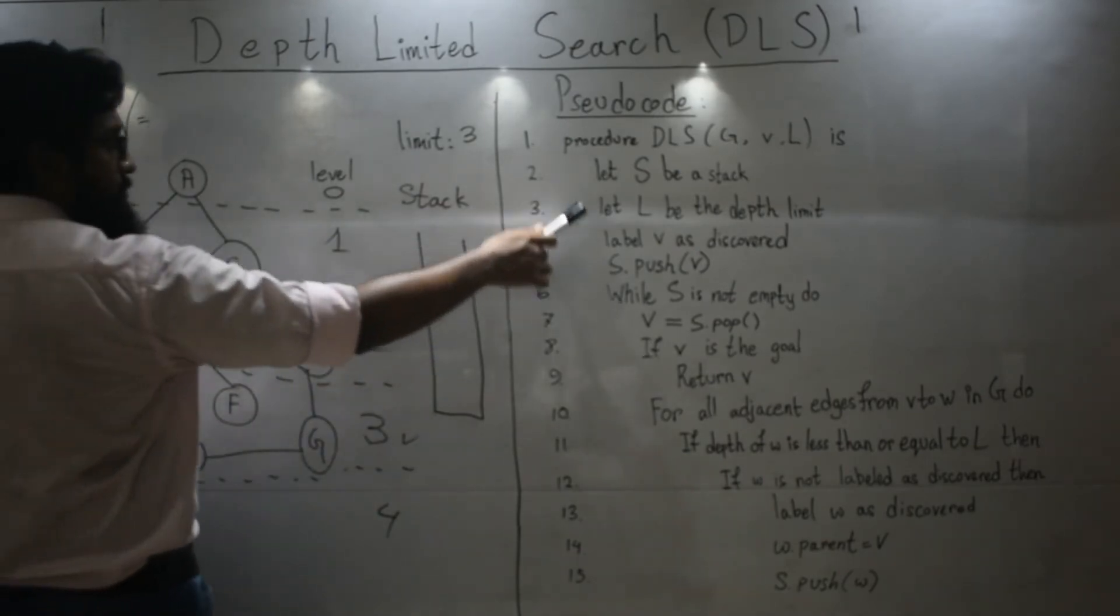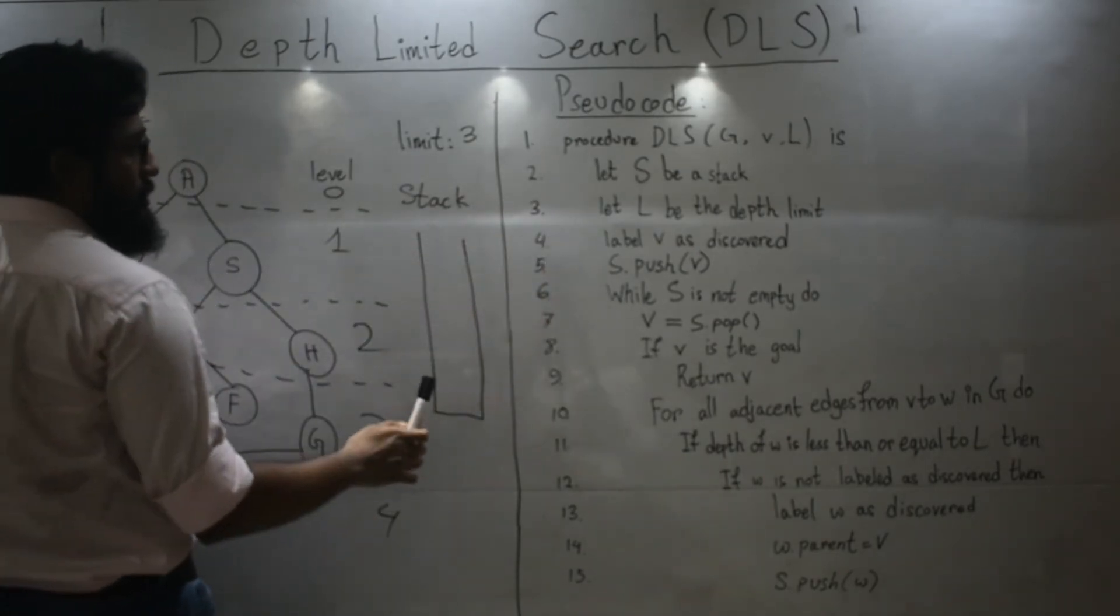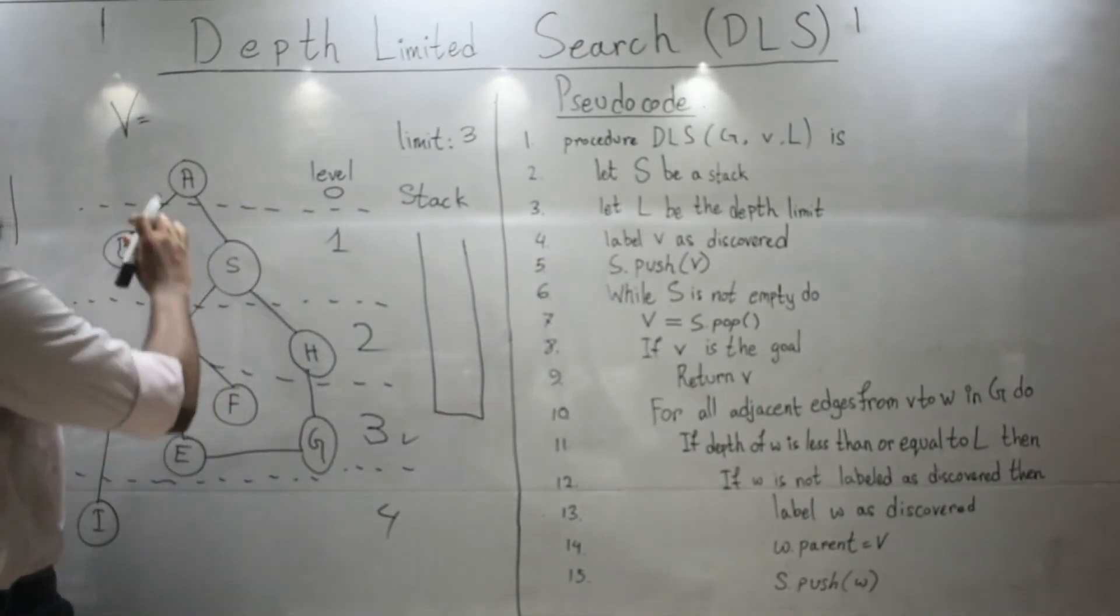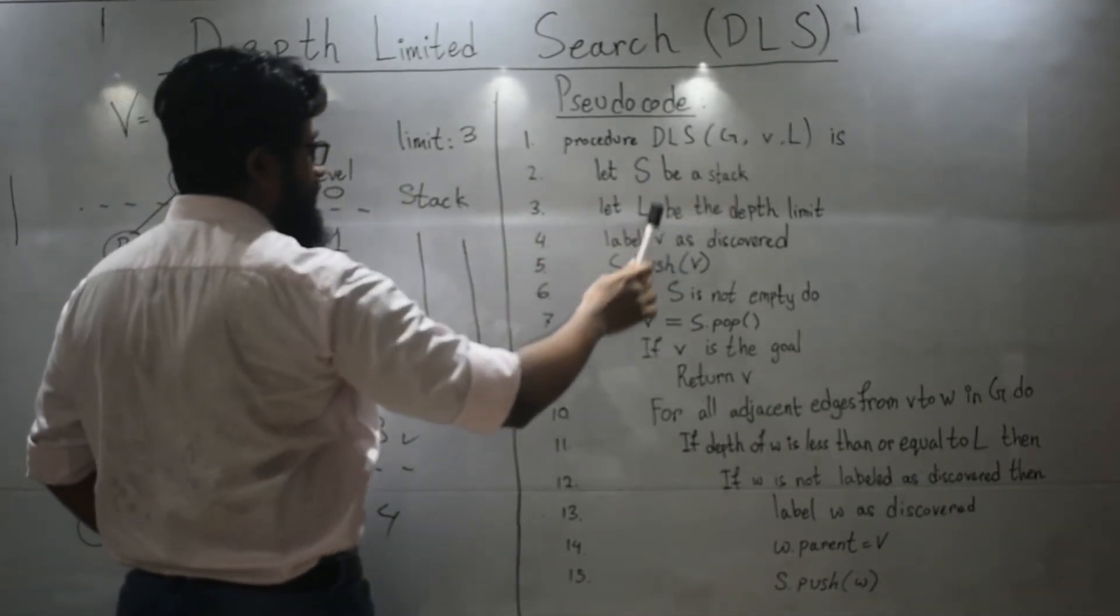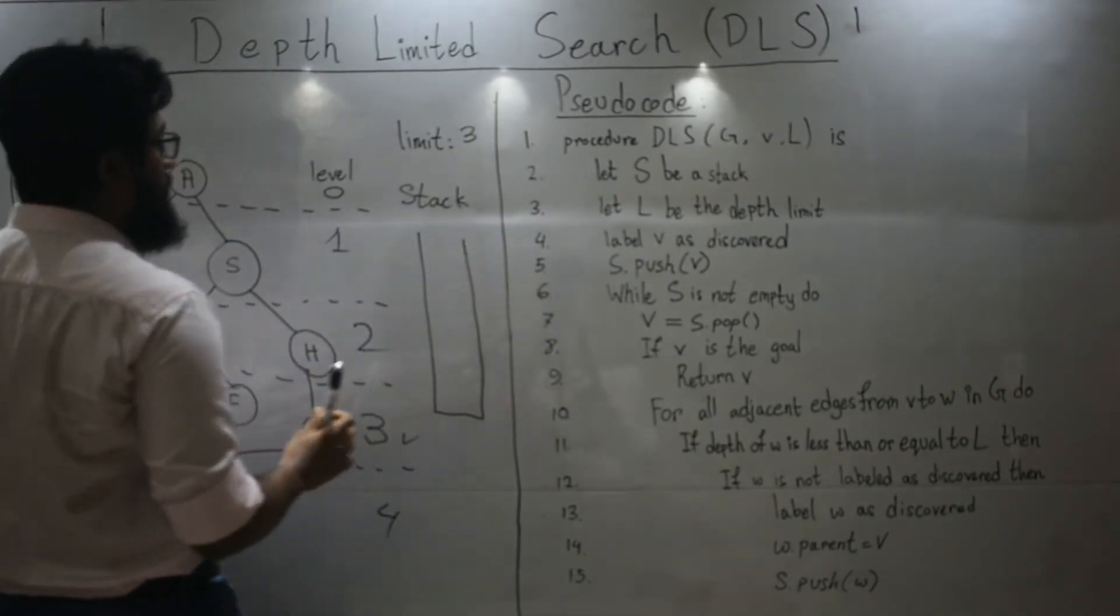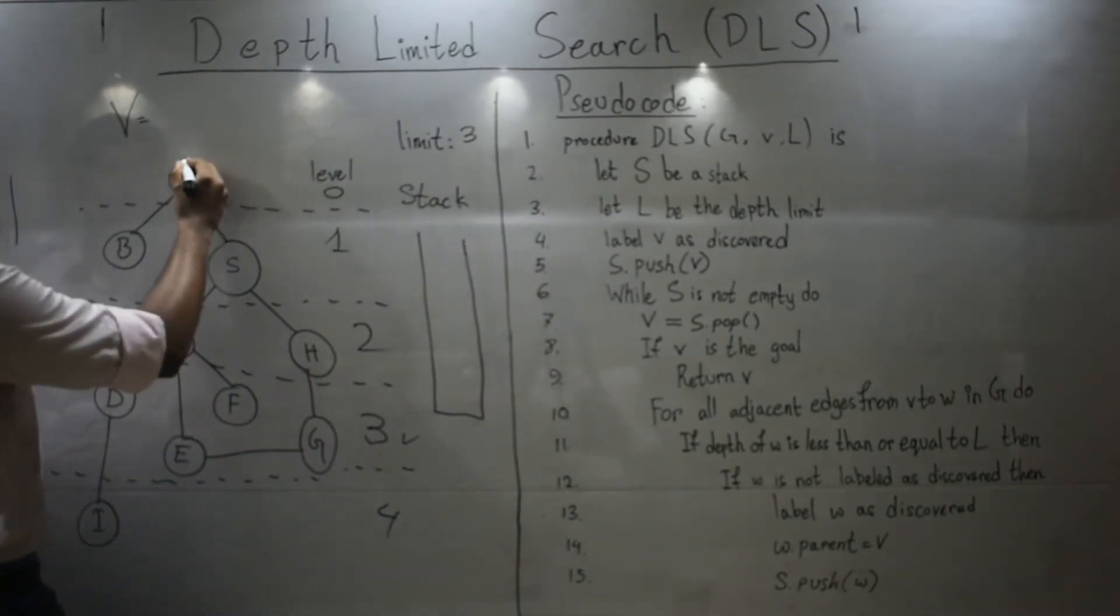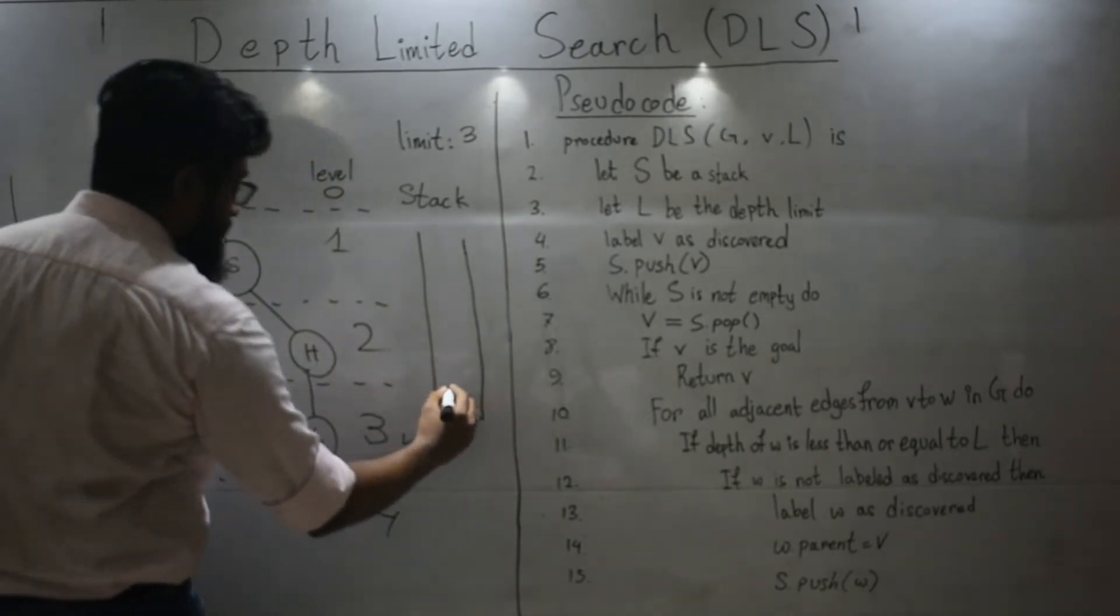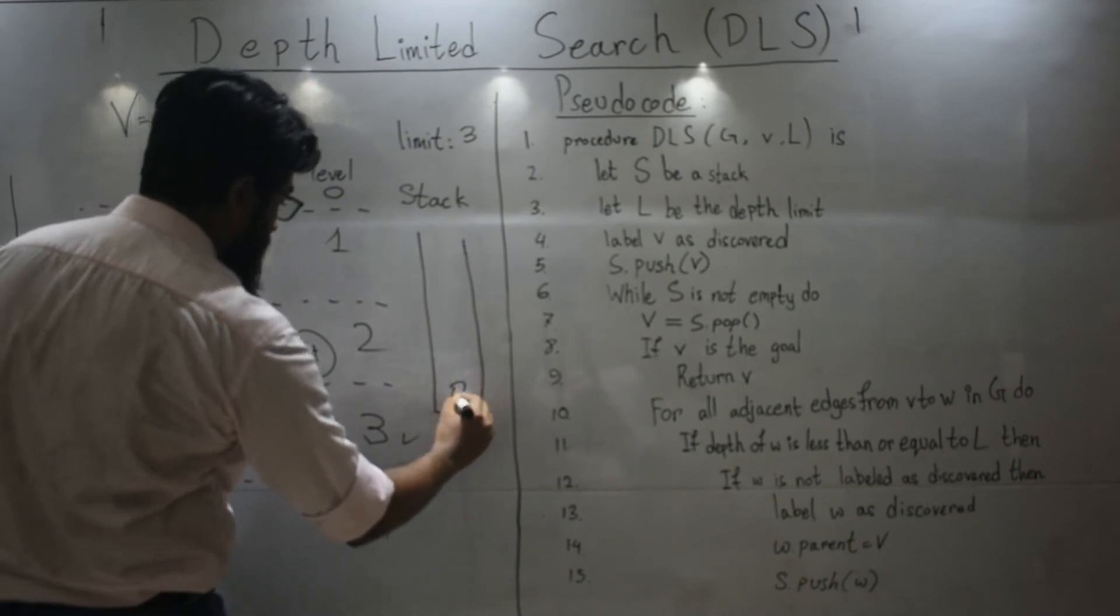So, let's begin. So, what we will do at first? At first, you will see that my root node is V. So, label V as discovered. To discover it, I am going to shade it. And then, push V. So, A.